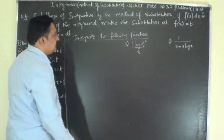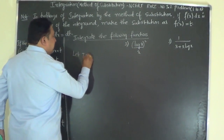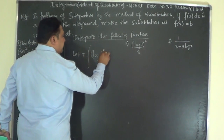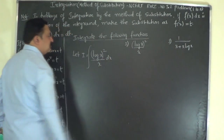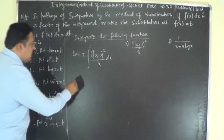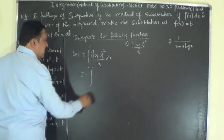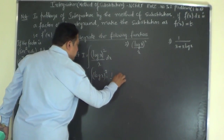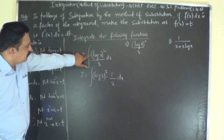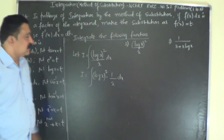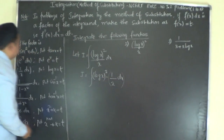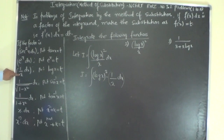Second problem: let I = ∫ (log x)² / x dx. Observing this problem, we can write it as ∫ (log x)² · (1/x) dx. This problem has 1/x dx as a factor. Since 1/x dx is a factor, the substitution is: put log x = t.